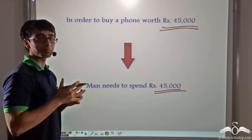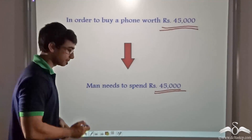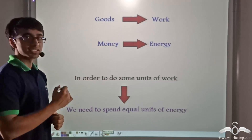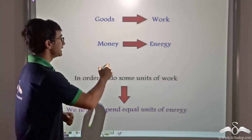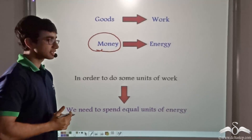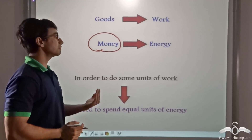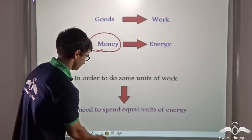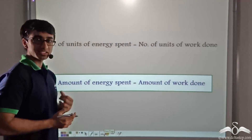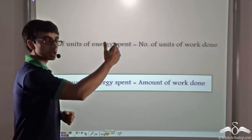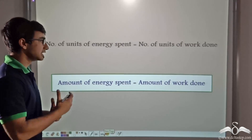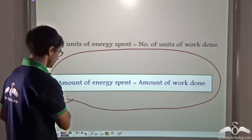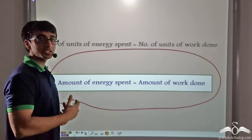We can derive this analogy and apply it in the case of energy and work as well. Just like to buy a definite number of goods we need money equal to the total price, similarly in order to do some units of work, an exact equal amount of units of energy will have to be spent. Thus the number of units of energy being spent will be equal to the number of units of work being done, and the amount of work done will depend on the amount of energy spent. The amount of energy spent will be equal to the amount of work done.